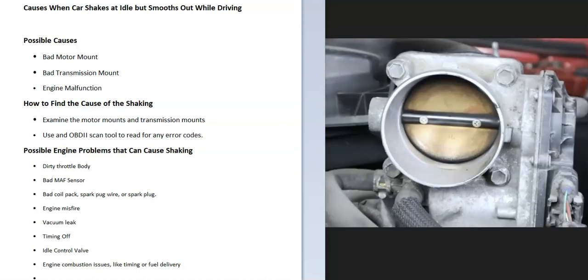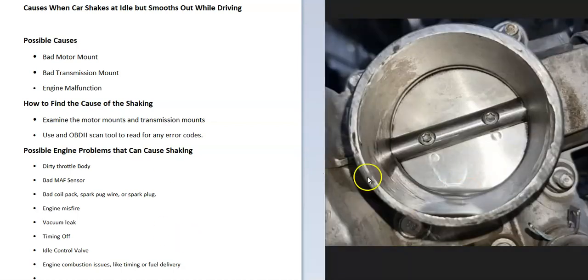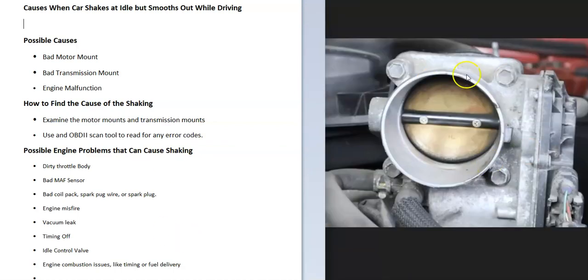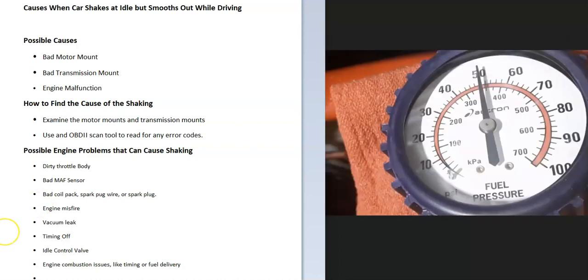Without engine codes, check the throttle body. Quite commonly these get dirty and throw the engine off—they just need to be cleaned up. This is fairly common, especially on Toyotas. Examine your throttle body and see how dirty it is. If it's really dirty, get some throttle body cleaner, spray it in, and clean it up real good.